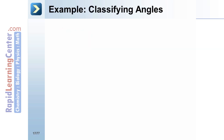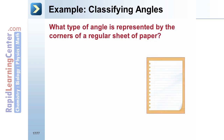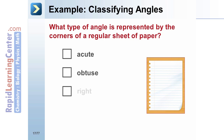Example: Classifying Angles. What type of angle is represented by the corner of a regular sheet of paper — acute, obtuse, right, or straight? The corner of a regular sheet of paper represents a right angle.